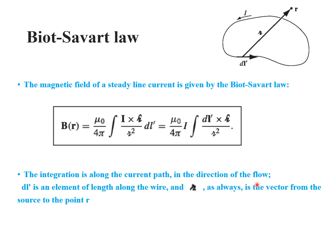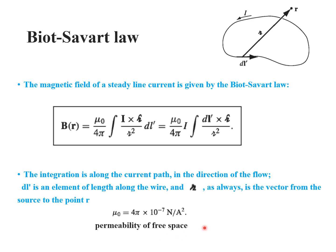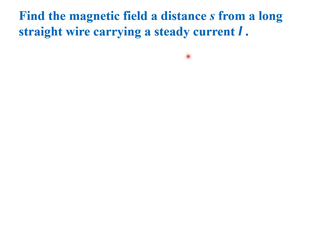In this formula, dl' is the small line element along the wire, r is the vector from the source to the point, and μ₀ is a constant equal to 4π × 10⁻⁷ N/A², known as the permeability of free space. Now we apply the Biot-Savart law to find the magnetic field.